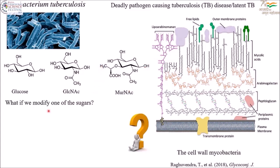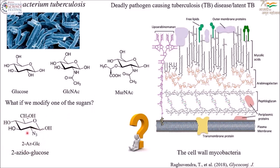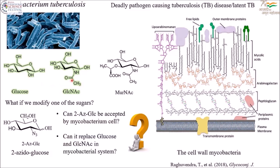So what will happen if we modify one of the sugars? Suppose we bring in glucose but with a different functional group in place of hydroxyl. This sugar, 2-azidoglucose, resembles both a glucose as well as a GlcNAc sugar. So the question is: can 2-azidoglucose be accepted by a mycobacterial cell?